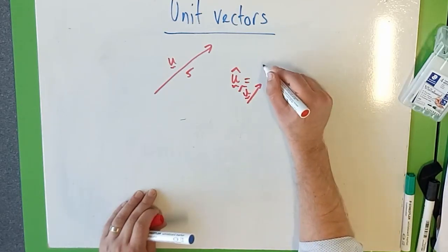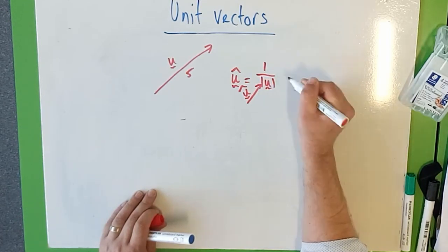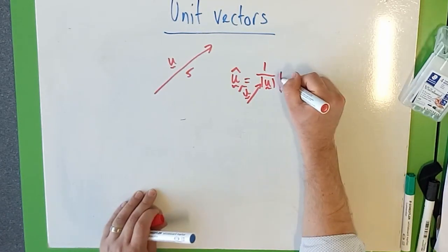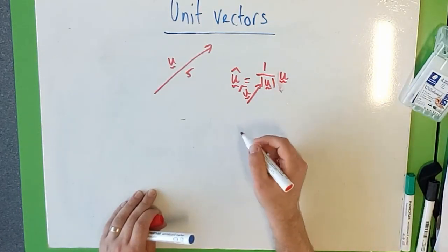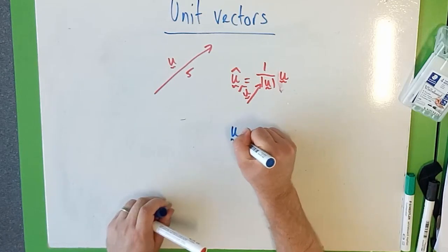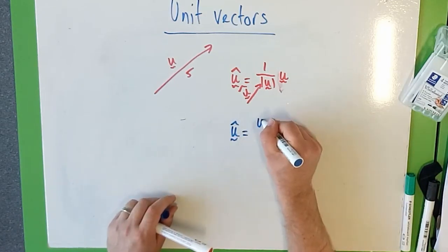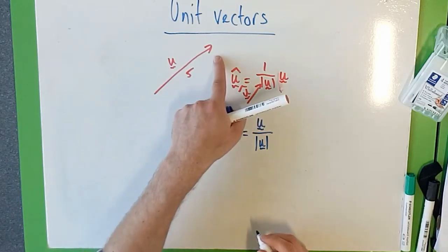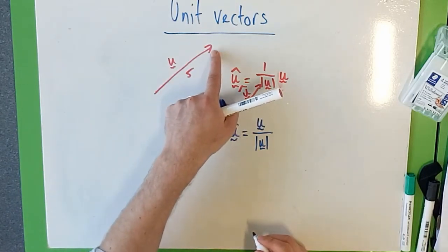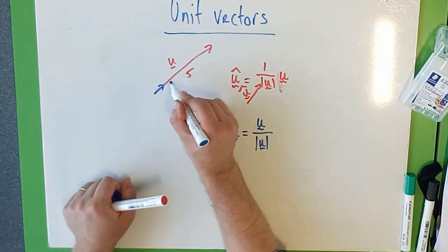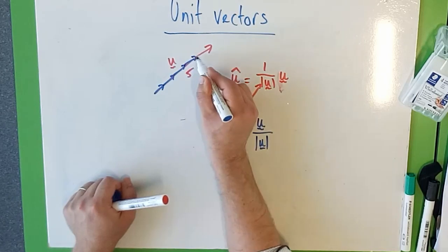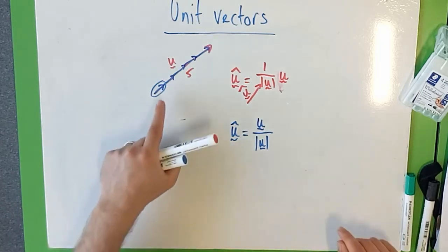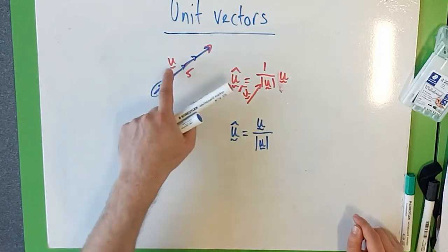So the way we work that out is we're going to do 1 divided by the magnitude of the normal u and then multiply that scalar multiplier by u. So u hat is u divided by the magnitude of u. So if this has a magnitude of 5, in order to find a unit vector I just want to break this up into 5 individual bits: 1, 2, 3, 4, 5. So any one of those is a unit vector. So dividing by its magnitude gives me a vector that is a magnitude of 1 in the same direction as u.